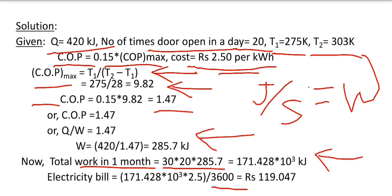Here we get the value of the electricity bill which is 190.07. In this way we have calculated the electricity bill of the given refrigerator.